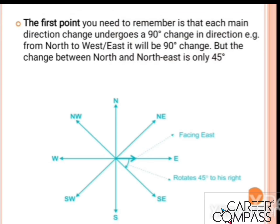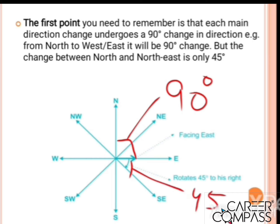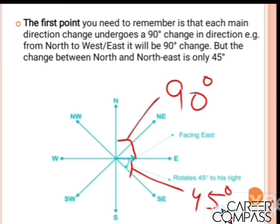The cardinal directions show a 45-degree rotation. If you are going to South-East, you are going 45 degrees between South and East. Turning 90 degrees from North gives you East; similarly, turning 90 degrees from North the other way gives you West.